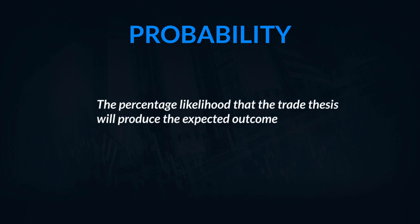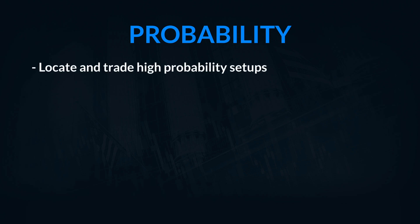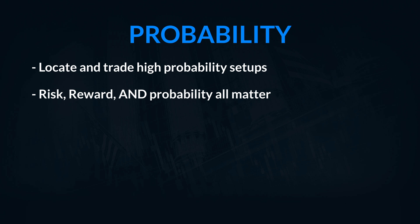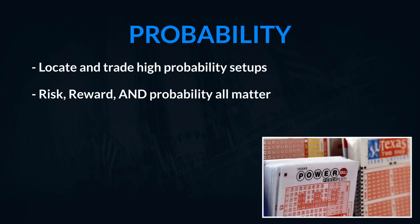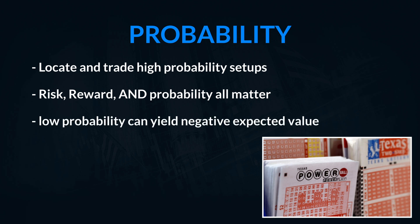The next part of our discussion relates to probability, defined as the percentage of time that when I have a trade thesis it plays out the way I expect. Am I accurate in predicting what is going to happen? With probability, it's very important that we have high probability setups — when we take a trade we want there to be a good chance of it playing out. I might have a great reward-to-risk ratio, but if I have a very low probability, I can have a negative expected value. An example is the lottery: you might have a huge payout if you're right, but the probability is so low it makes it a negative expected value activity.